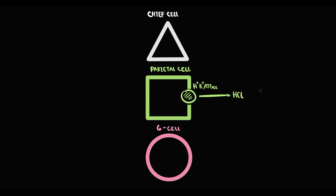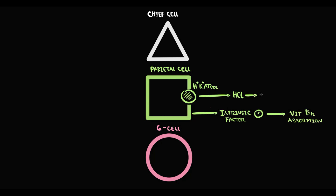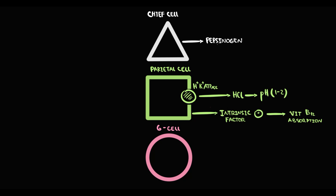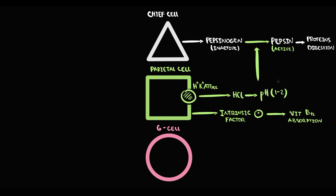By hydrogen-potassium ATPase, parietal cells produce hydrochloric acid, and also parietal cells produce intrinsic factor. Intrinsic factor is essential for vitamin B12 absorption, and hydrochloric acid is required to create the acidic pH inside the stomach. The function of chief cells is to produce pepsinogen, but pepsinogen is an inactive enzyme. In order to be activated, acidic pH cleaves a part of pepsinogen, thereby creating pepsin, and the function of pepsin is protein digestion.